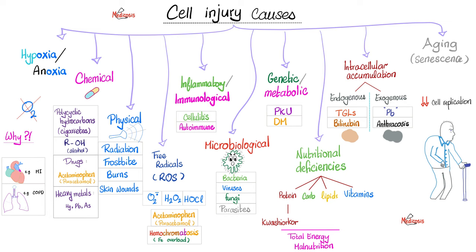Nutritional deficiencies can injure my cells. If I am deficient just in proteins, this is called protein energy malnutrition - a famous example is kwashiorkor disease. But if I'm deficient in all three macronutrients due to abject poverty, that's called total energy malnutrition, such as the disease known as marasmus. The patient will have cachexia, which we talked about before in this pathology playlist.